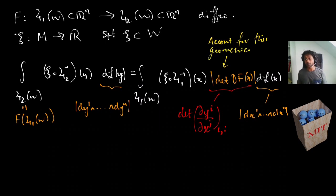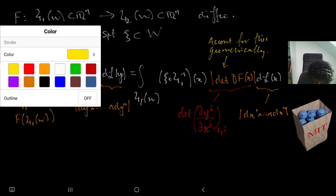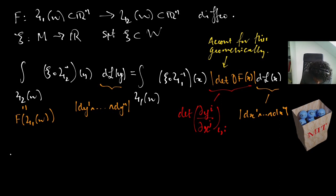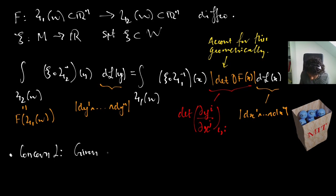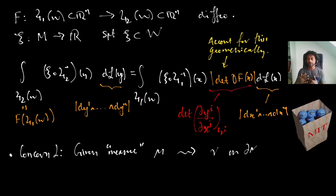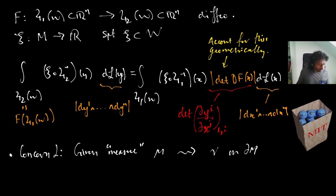The second concern is: given a measure μ on M, we want to extract a measure on the boundary in a way that depends on some auxiliary data we put on the boundary. We're going to kill two birds with one stone here by geometrizing this entire setup.